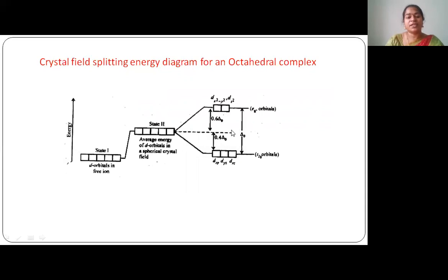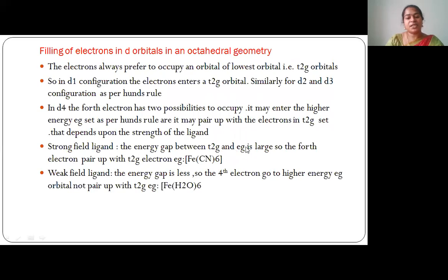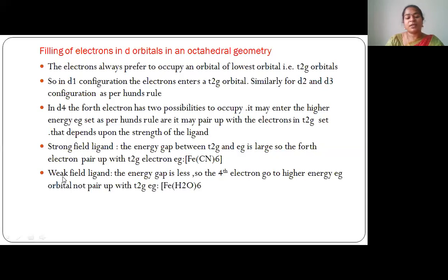This depends upon the nature of the ligand in the metal complex. If the ligand is a strong field ligand, the energy gap between t2g and eg is large, so the fourth electron will pair up with a t2g electron and does not go to the higher energy eg orbital. For example, in Fe(CN)6, cyanide is a strong field ligand, so the energy gap is large and the fourth electron pairs with t2g. If the complex contains a weak field ligand, the energy gap is smaller and the fourth electron goes to eg. For example, Fe(H2O) — water is a weak field ligand, so the fourth electron goes to the eg orbital.